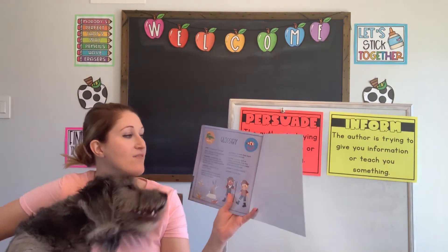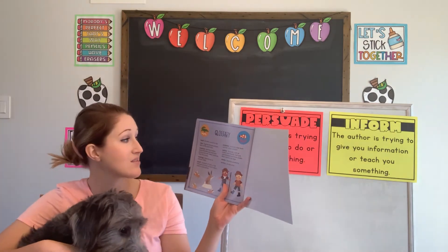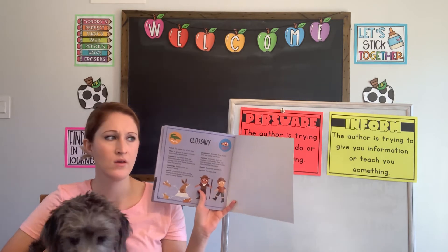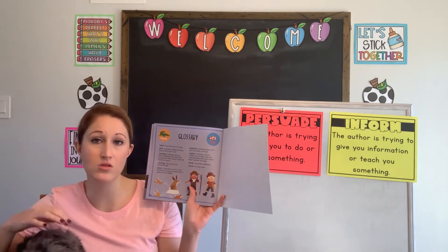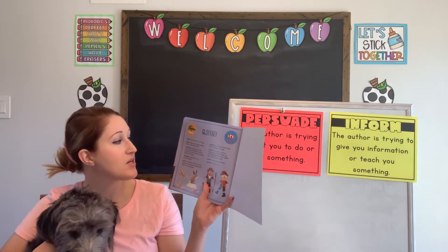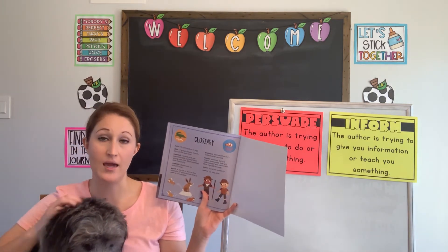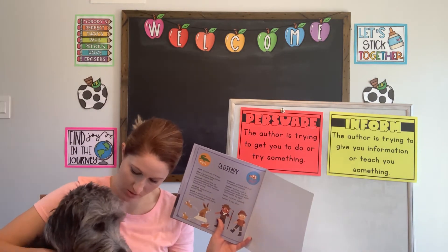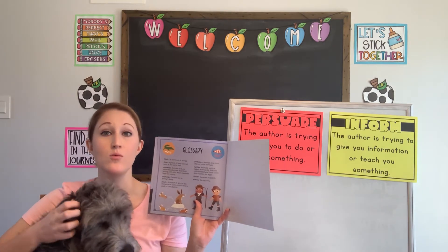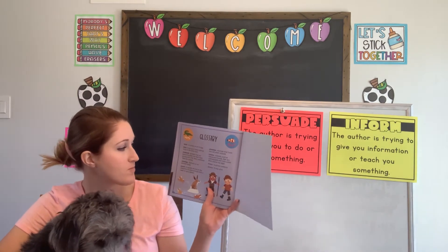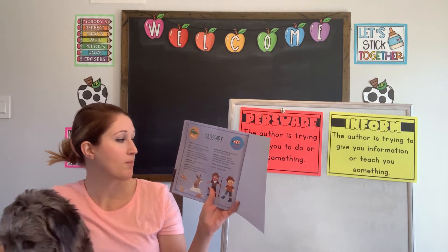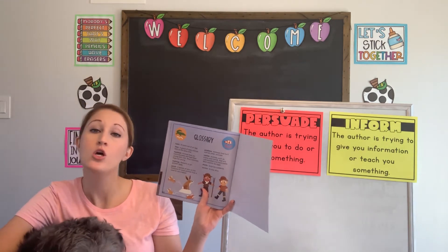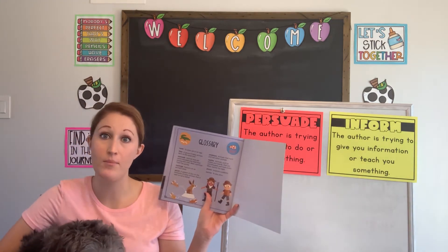The first word we have is hatch, and that means to come out of an egg. A lot of animals hatch — birds, turtles, those are a few. A litter is a group of baby animals born at the same time. So dogs are born in a litter — when my Winnie here was born, she was born as part of a litter. Mammals are animals that are warm-blooded and feed their young with milk. Most mammals have live young — humans are an example of a mammal.